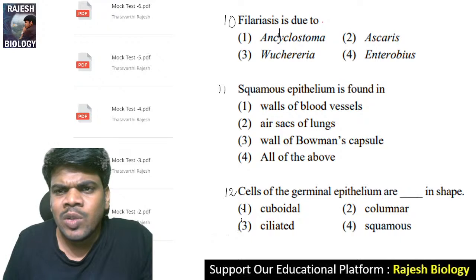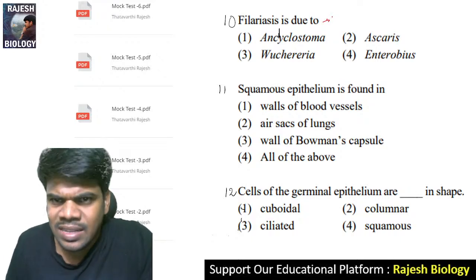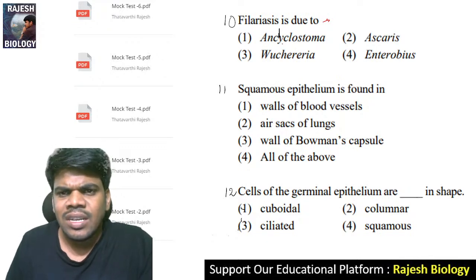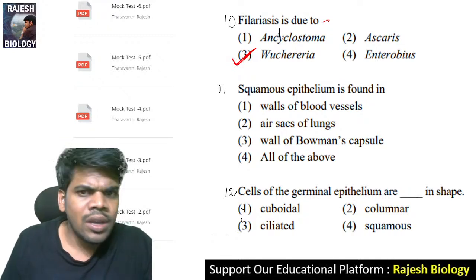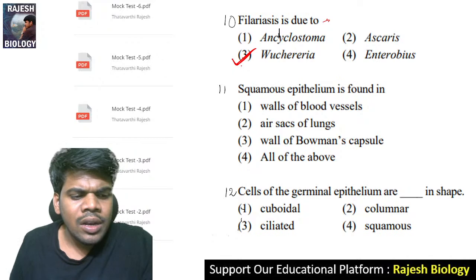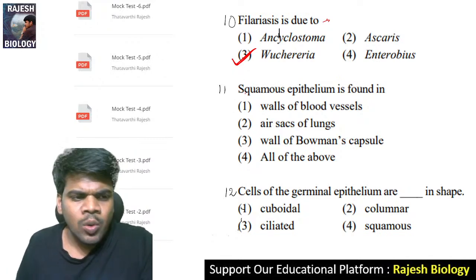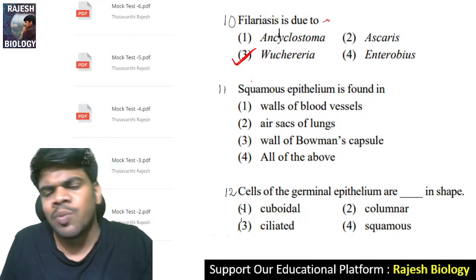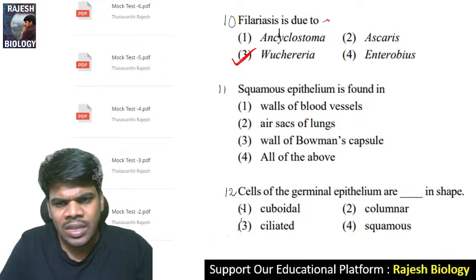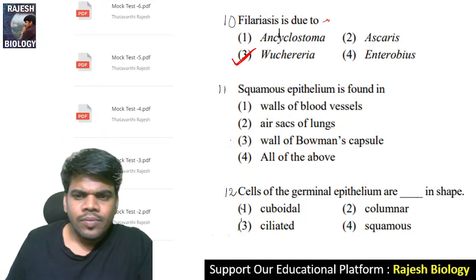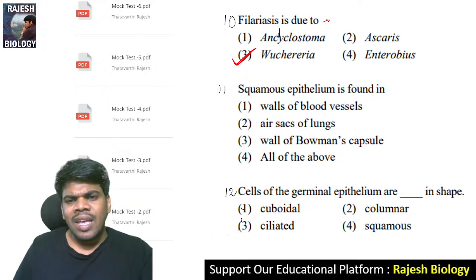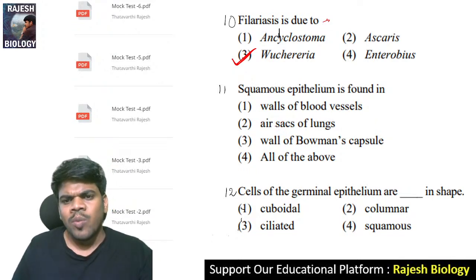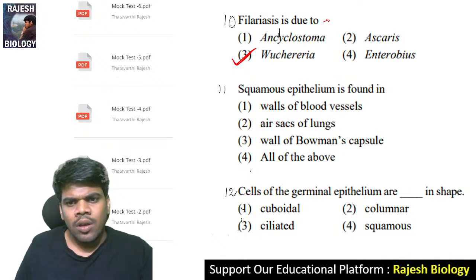Tenth question: Filariasis is due to — filariasis means elephantiasis. It is caused by Wuchereria bancrofti. Eleventh question: squamous epithelium is found in the wall of blood vessels, air sacs of the lungs, wall of Bowman's capsule — actually it is present in all of the above.